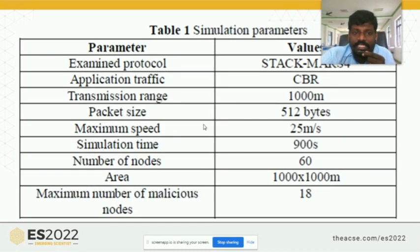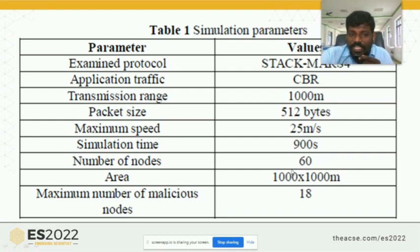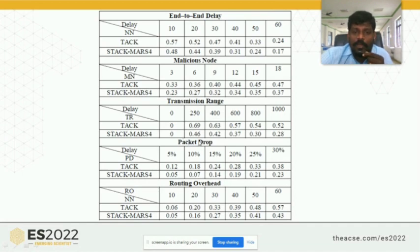These are the simulation parameters used in this paper. I use CBR — Constant Bit Rate traffic. The simulation area is 1000 meters with a packet size of 525 bytes. The maximum node speed is 20 meters per second and the simulation time is 90 seconds. I am using 16 nodes. The area is 1 kilometer and also using 18 malicious nodes. The simulator used is NS2. The performance metrics evaluated are end-to-end delay, packet drop, throughput, and routing protocol overhead.